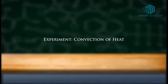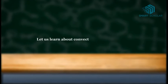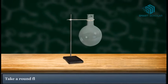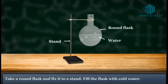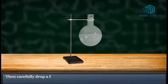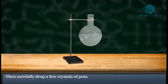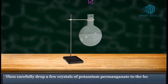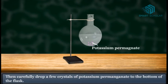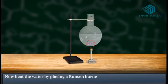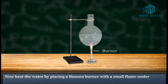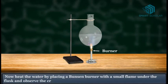In this experiment on convection of heat, let us learn about convection in water. Take a round flask and fix it to a stand. Fill the flask with cold water, then carefully drop a few crystals of potassium permanganate to the bottom. Now heat the water by placing a Bunsen burner with a small flame under the flask.